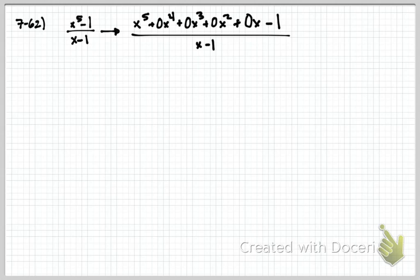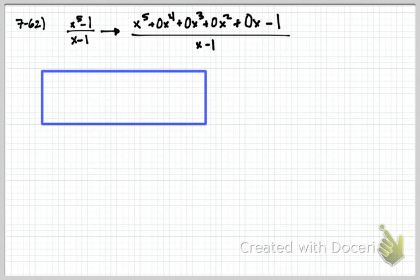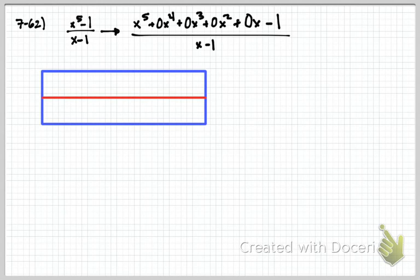Alright, all over x minus 1. So we have our box. We know that our box is going to have six columns. We always do one more.